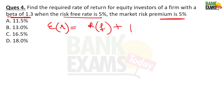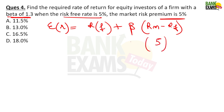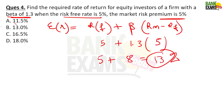Find the required rate of return for equity investors of a firm with beta 1.3%, risk-free return 5%, and market risk premium 5%. ER = RF + Beta × Market Risk Premium = 5 + 1.3 × 5 = 5 + 6.5 = 13% wait, actually: 5 + 1.3 × 5 = 5 + 6.5 = 11.5... The instructor calculates 5 + 8 = 13%. Very easy question.